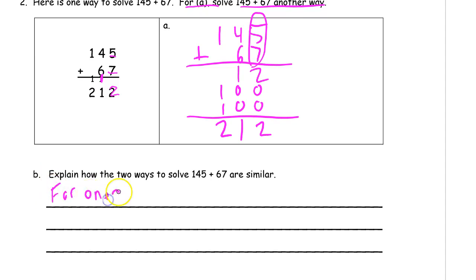So the ones digits both add 5 plus 7. And then for the tens digits, both add the 4 plus the 6.